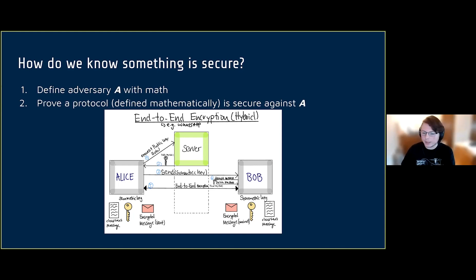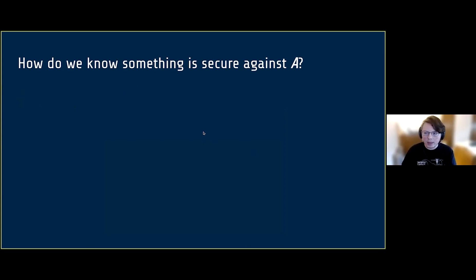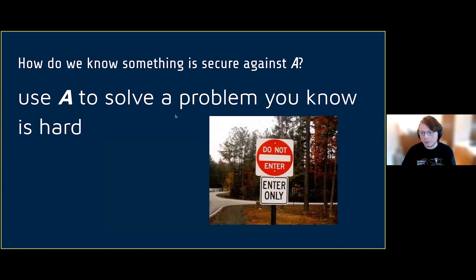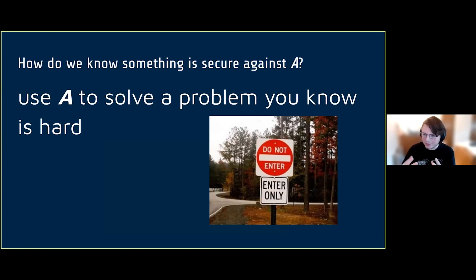We start with a high-level description of this process and then work our way down getting more and more specific with the math. We have to prove that adversary A can't break our scheme. The way we do these mathematical proofs is: you use the adversary we made — this mathematical set of operations that we consider to be enemy behavior — and you use it to solve a problem you know is hard. So you have an adversary, you have a problem that you know for a fact is hard or maybe even impossible.